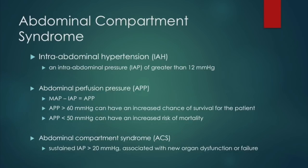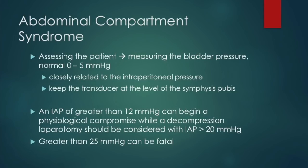Abdominal compartment syndrome begins at a sustained IAP of 20 millimeters of mercury, and this is associated with new organ dysfunction or failure. We assess pressures by measuring the bladder pressure. The normal bladder pressure is 0 to 5 millimeters of mercury, and it's closely related to the intraperitoneal pressure. When measuring bladder pressure, keep the transducer at the level of the symphysis pubis. A decompression laparotomy should be considered with an IAP of greater than 20.